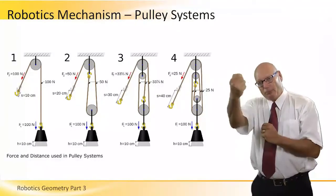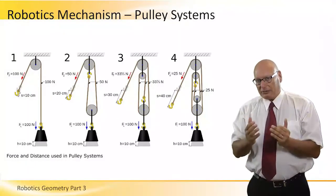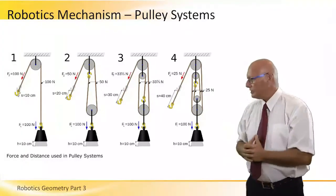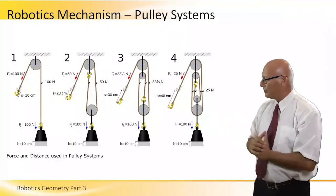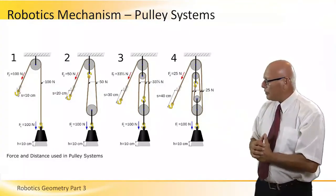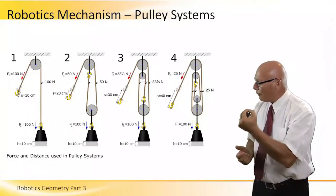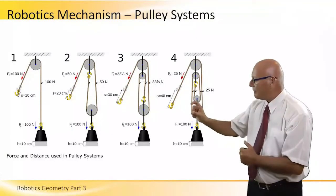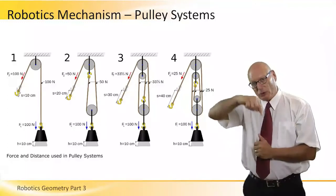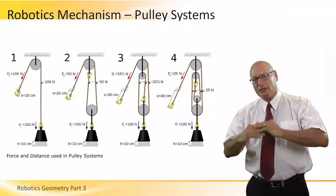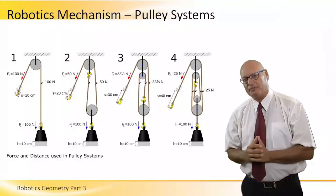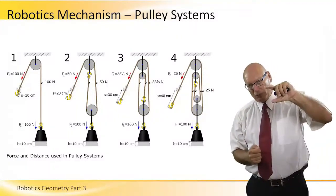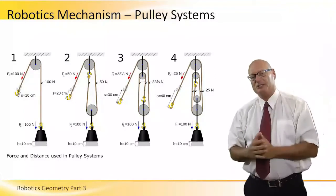With pulley systems, we gain power but pay in terms of displacement. Let's compare the four pictures, starting with number one on the left: the force is 100 Newton and the displacement is only 10 centimeters. That's because it's a 1:1 ratio, the lowest degree of power of the pulling system. We pull with 100 Newtons for a distance of 10 centimeters.